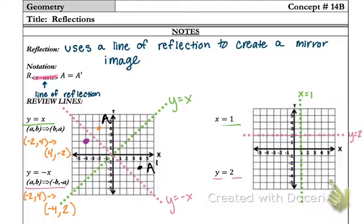I'm going to use the exact same point as I did before. And that would be negative 2, 4. And after I reflected it over the line x equals 1, I get the point 4, 4.